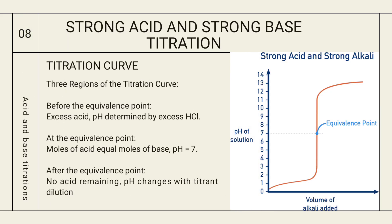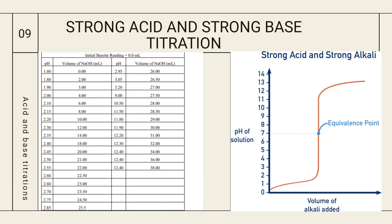For strong acid and strong base titration, the titration curve has three regions: before the equivalence point, at the equivalence point, and after the equivalence point. Before the equivalence point, we have acid in the conical flask, so the pH is determined by HCl — approximately pH 1 or 2. At the equivalence point, moles of acid equal moles of base and pH is approximately 7. After the equivalence point, no acid remains but titrant continues to be added, so pH rises toward 12 or 13.